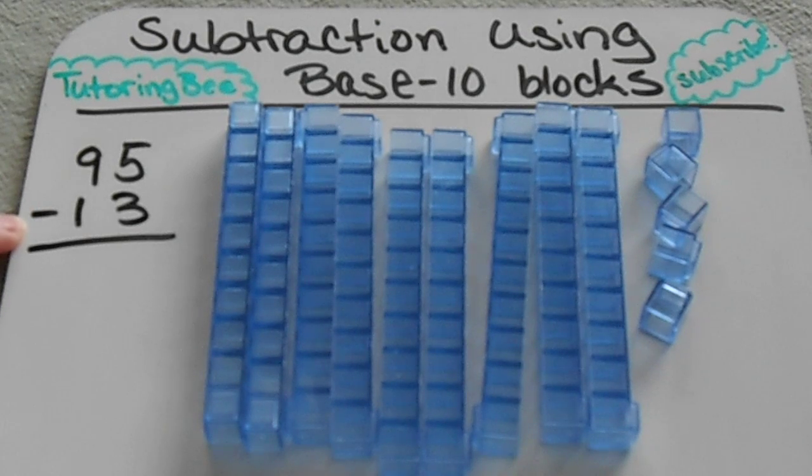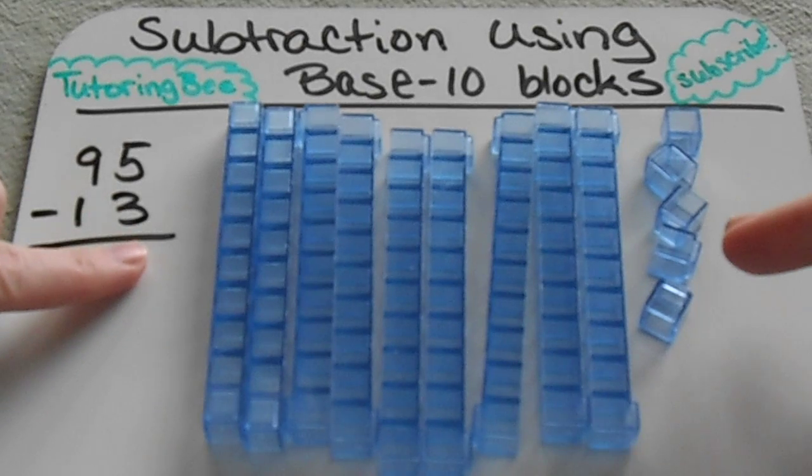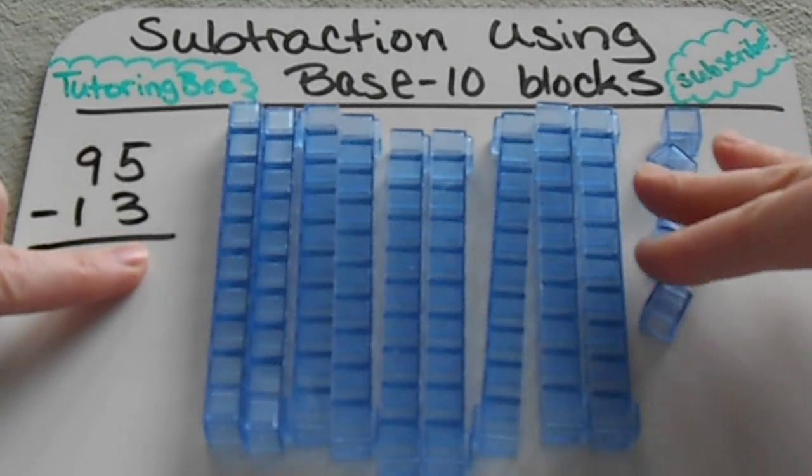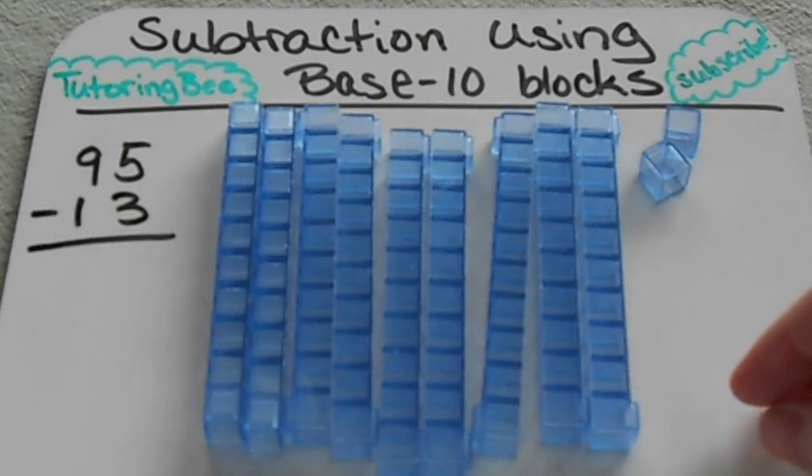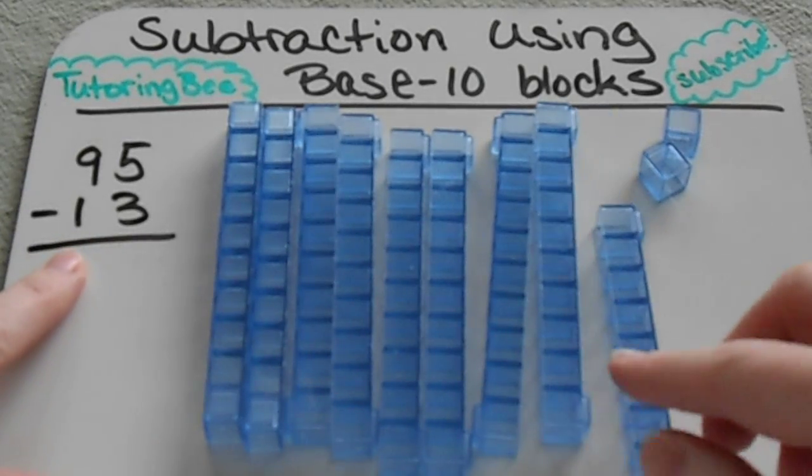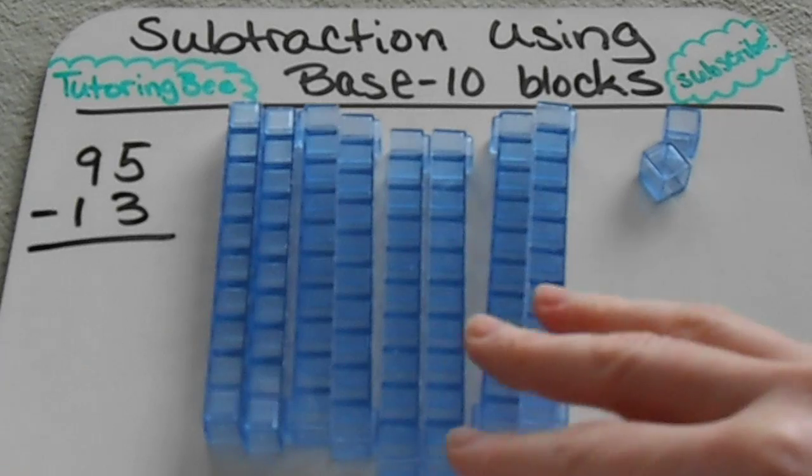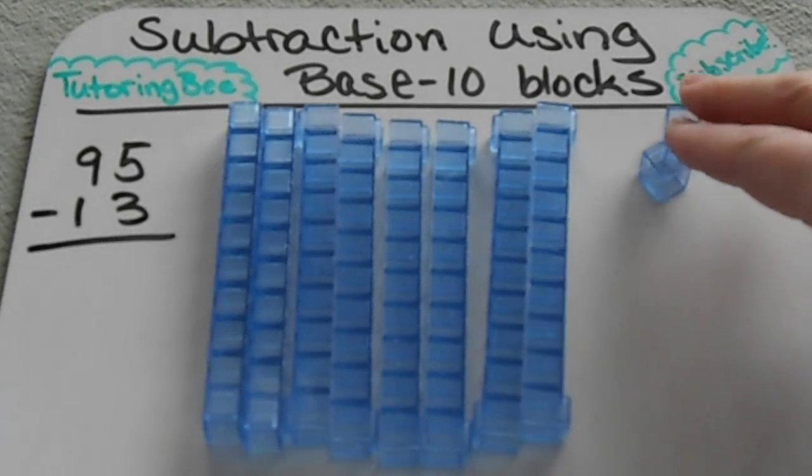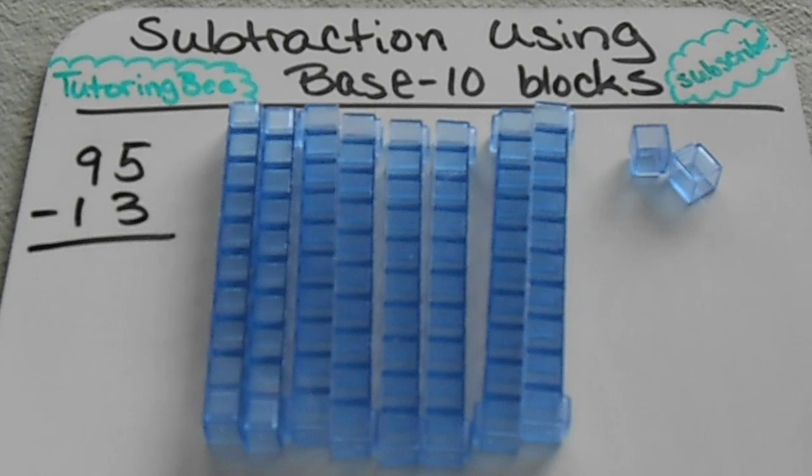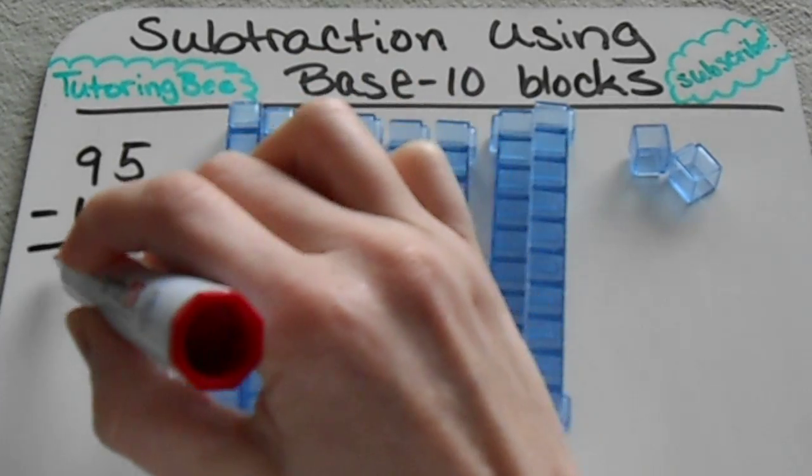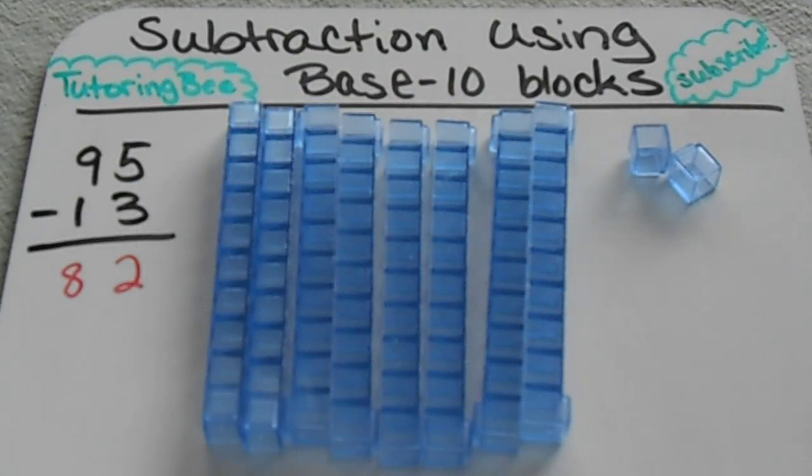And then since subtraction means take away, that's exactly what I'm going to do. I'm going to start with my smaller place value, the ones place. I'm going to take away three of these ones, put those off to the side. I'm going to take away one of these tens, put that off to the side, and then count up what I have left. I have two ones and eight tens left. So my answer would be 82.